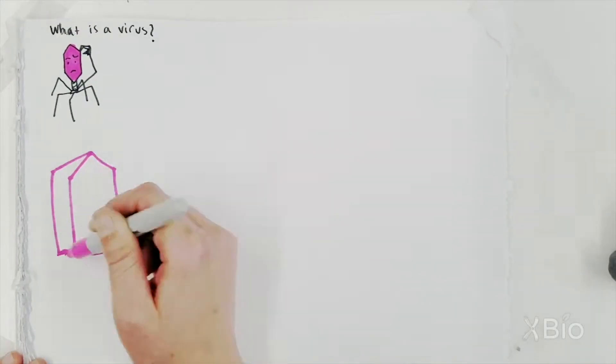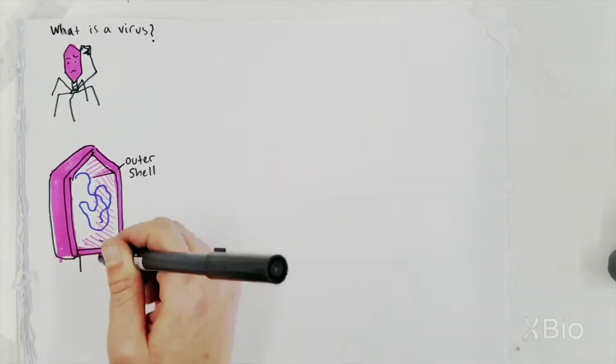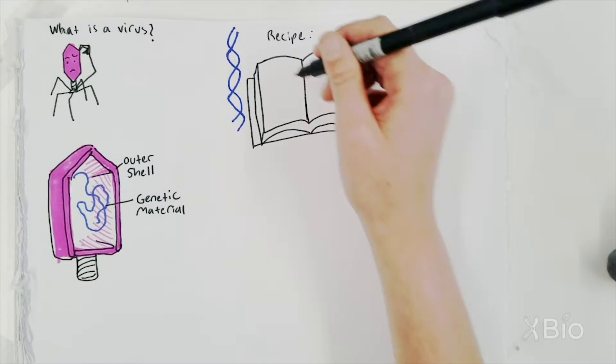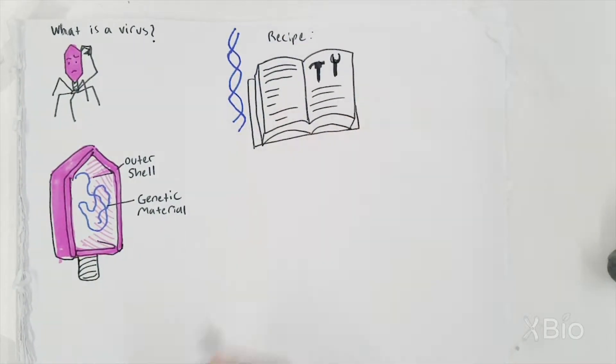But what exactly is a virus? Viruses are made of an outer shell that holds genetic material. This genetic material is the recipe for viruses to make more viruses.